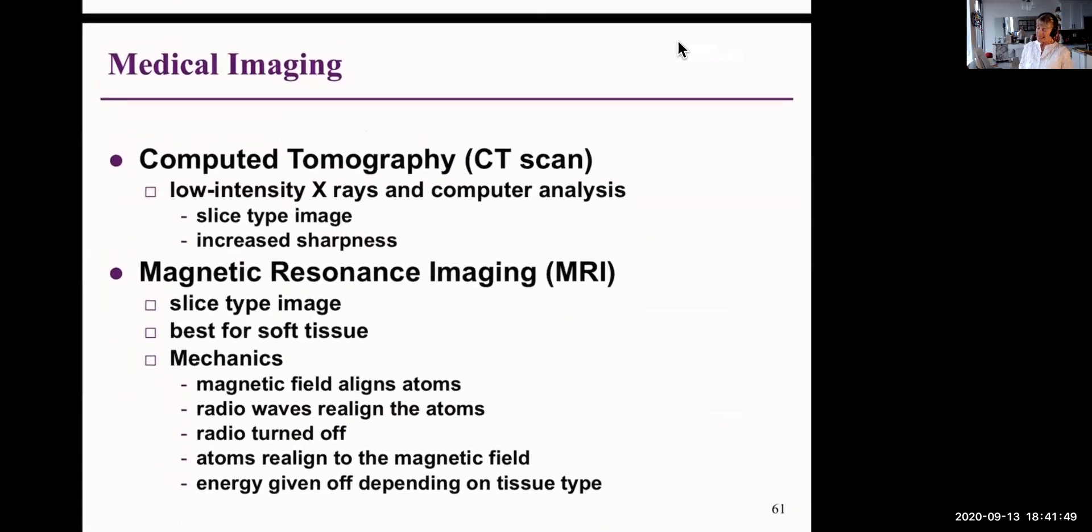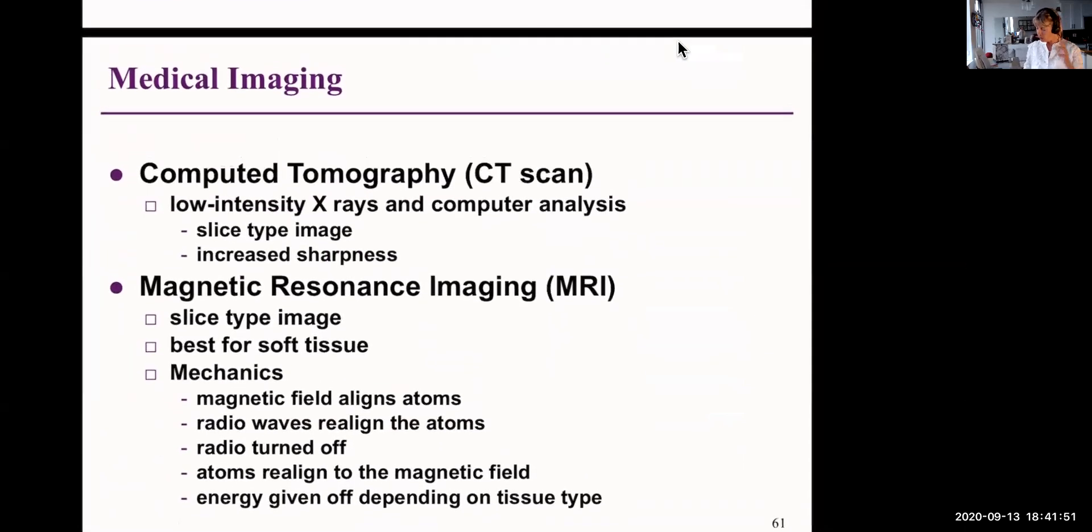Computed tomography or CT scan are x-rays as well, but they're low intensity and they can give a very sharp image, a cross section, for example.